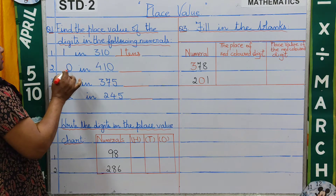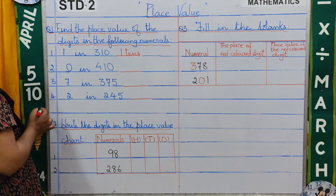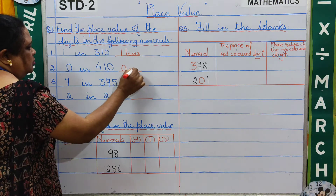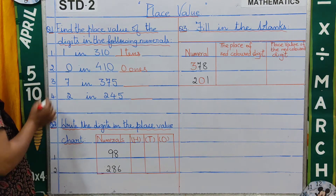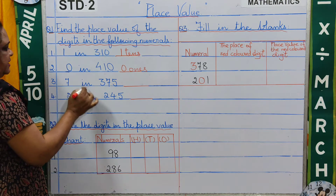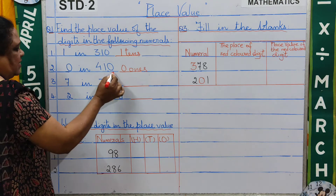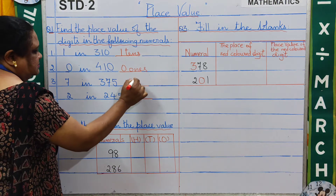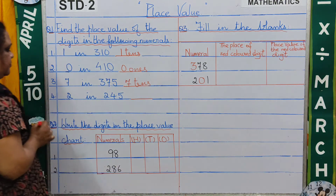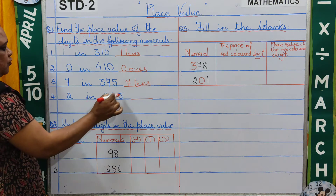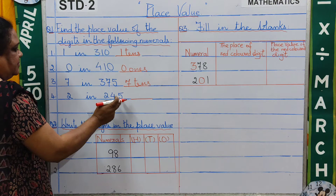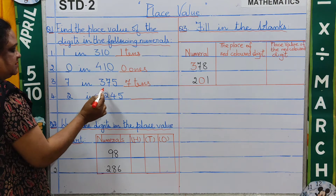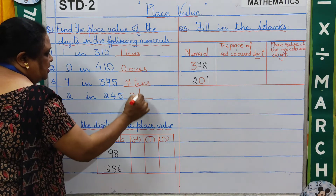Number 2: find the place value of 0 in 410. Here 0 is in the ones place, so 0 is in the ones place. Number 3: find the place value of 7 in 375. Here 5 is in the ones place and 7 is in the tens place, so 7 is in the tens place. Number 4: find the place value of 2 in 245. Here 5 is in the ones place, 4 is in the tens place, and 2 is in the hundreds place, so 2 is in the hundreds place.